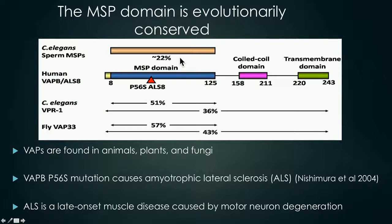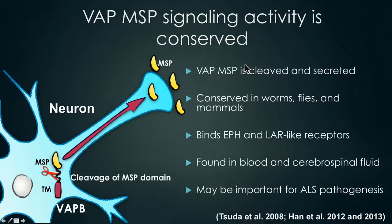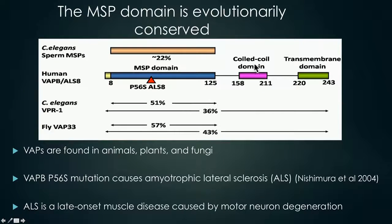Although MSPs are only found in nematode sperm, the MSP domain can be found in many animal species. These MSP domains are found in a larger family of proteins called VAPs. These VAPs have three domains: the MSP domain, the coiled-coil domain, and a transmembrane domain. This transmembrane domain is located in the membrane of the endoplasmic reticulum where the MSP domain faces the cytosol.